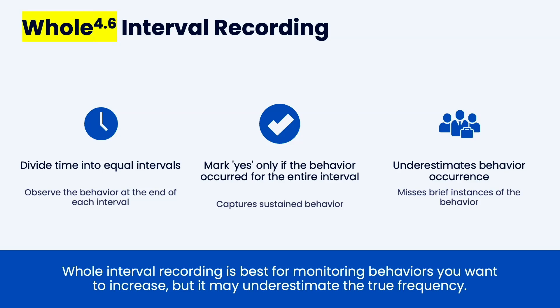Whole interval recording uses the same data sheet. You divide your observation into standard time periods — 10 seconds, 20 seconds, 30 seconds, one minute, five minutes, or 10 minutes. You mark yes only if the behavior occurs through the entire interval. If the behavior stops at any moment, it's a no. This underestimates behavior.